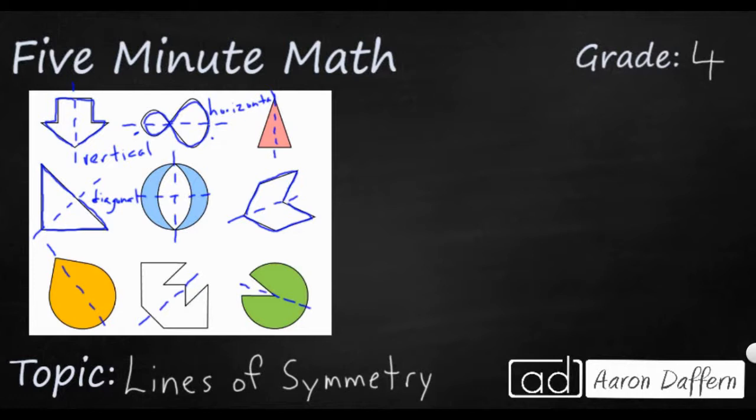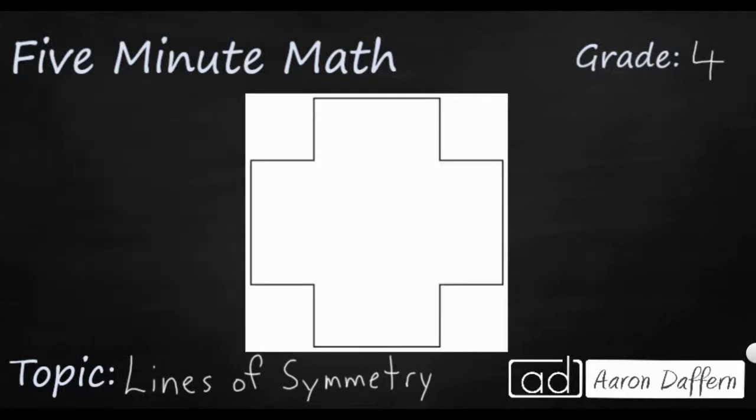Let's see what happens when we have shapes that have more than one line of symmetry. So here we have a twelve-sided shape. For those of you that are wondering, what do you call a twelve-sided shape? It's called a dodecagon. It's a strange name. It's a twelve-sided shape. How many lines of symmetry do you think we can find in this one?